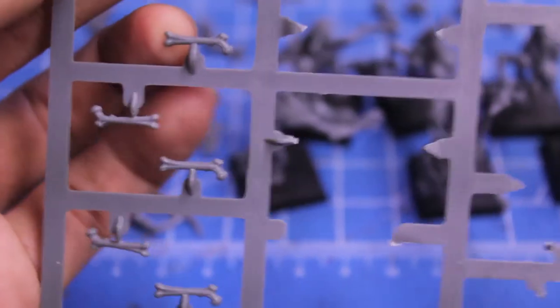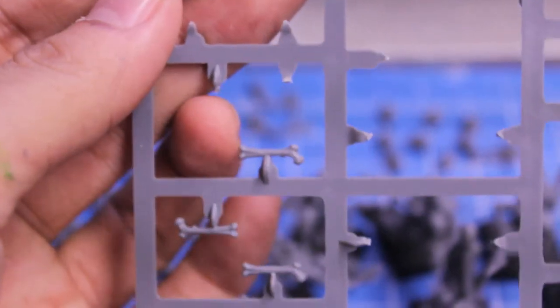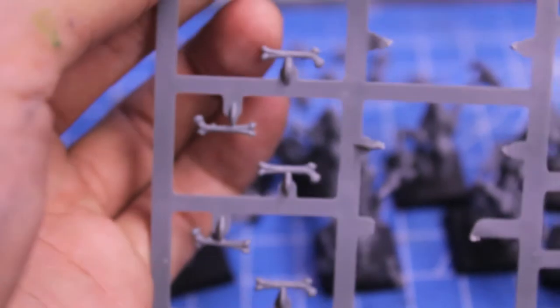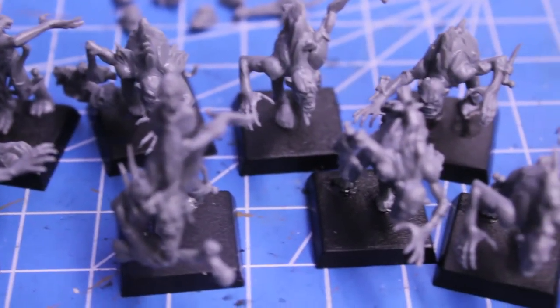you do have one, two, three, four, five, six, seven. I cut off one of the bones, chopped it in half and used it to add to one of my ghouls here.